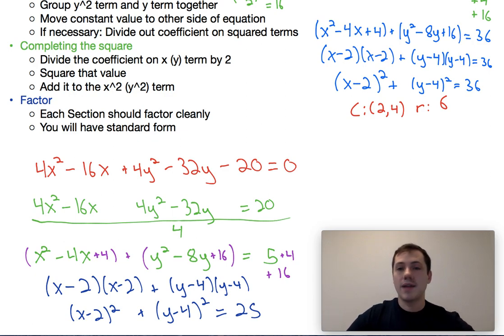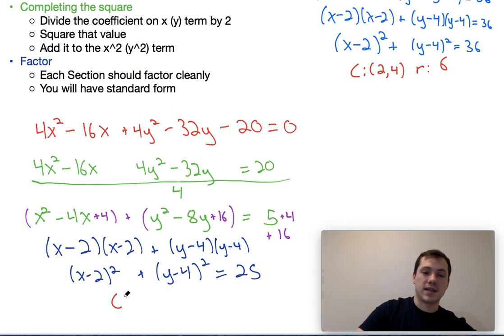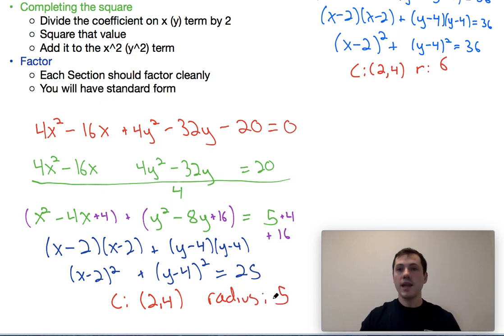And again, now that I'm in the standard form, and only now that I'm in the standard form, can I figure out what the center of the circle is as well as the radius. So in this case, the center of the circle would be the point 2 comma 4, and the radius would be 5. And that's how you do it.